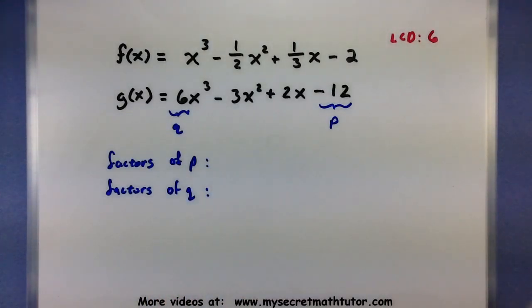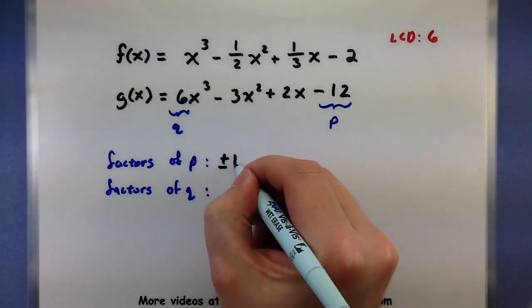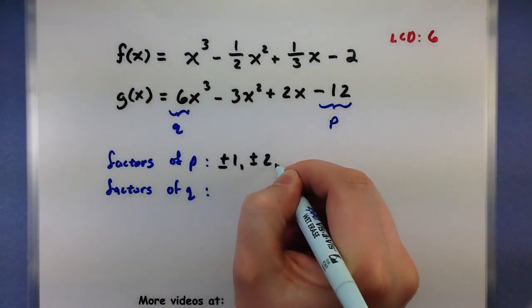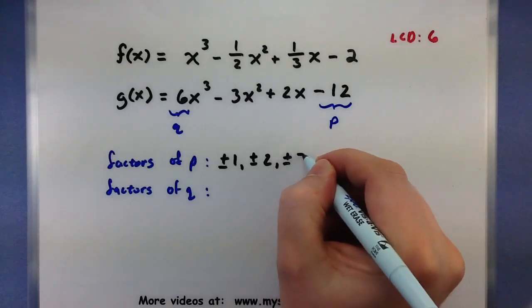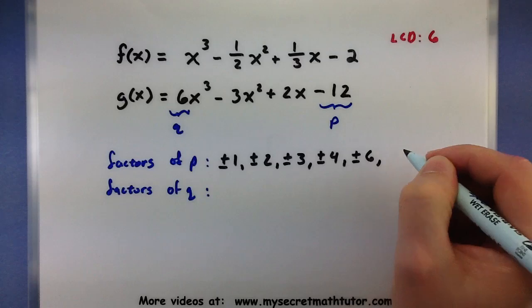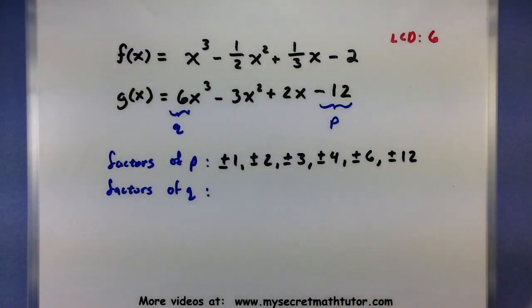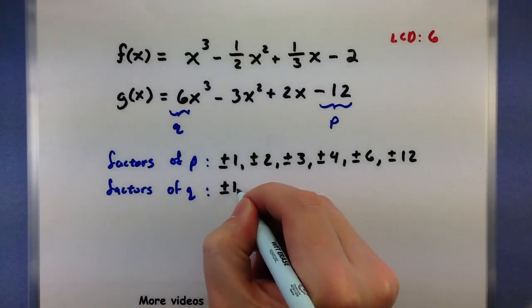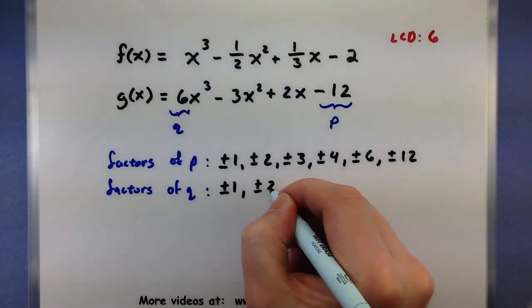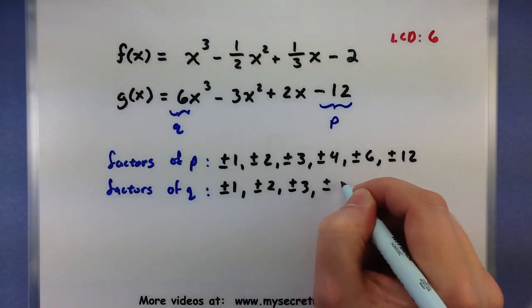Grab our p and our q. Make some factors. Starting with p, lots of different things that could go into p. So plus minus 1, plus minus 2, plus minus 3, plus minus 4, plus minus 6, plus minus 12. Wow, that is quite a bit. Alright, let's see the things that go into q. Plus minus 1, plus minus 2, plus minus 3, and plus minus 6.